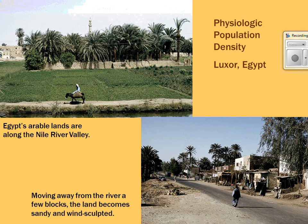When you look at physiologic population density, you can often have a much more reliable look at how people are distributed. It still won't tell you where people might be clustered, but it gives a more reliable idea than arithmetic density. In Luxor, Egypt, for example, physiologic density is pretty high because most of the land is desert with little arable land. Most people live within the Nile River Valley.